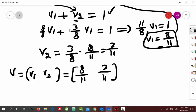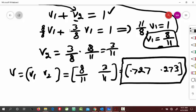so, it would become 0.727, and 0.273. So, this is your equilibrium vector for this transition matrix.